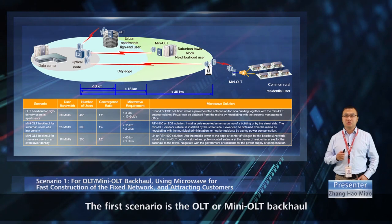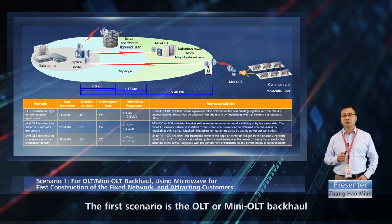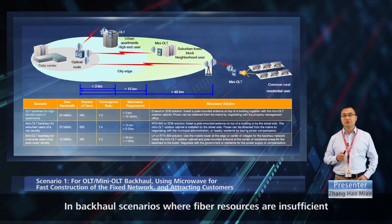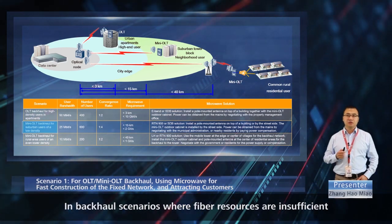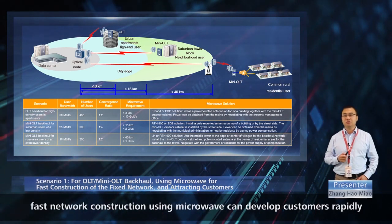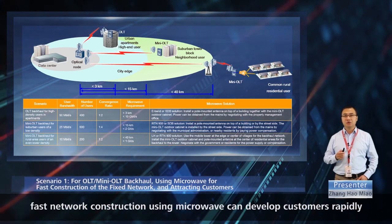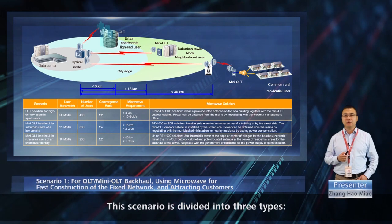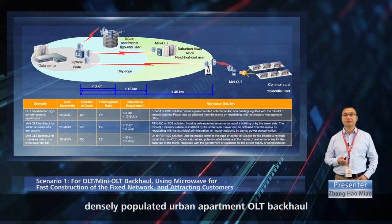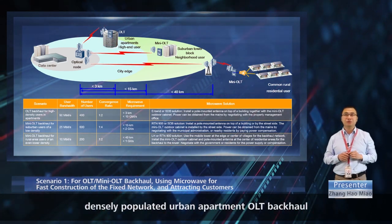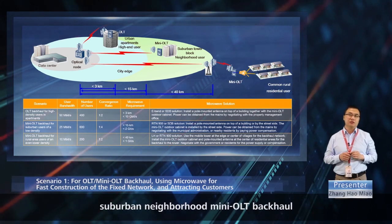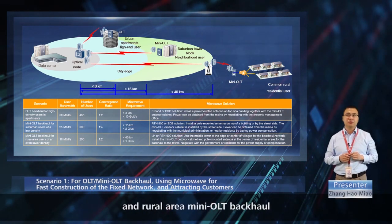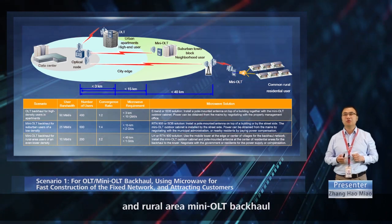The first scenario is the OLT or mini-OLT backhaul. In backhaul scenarios where fiber resources are insufficient, fast network construction using microwave can develop customers rapidly. This scenario is divided into three types: densely populated urban apartment OLT backhaul, suburban neighborhood mini-OLT backhaul, and rural area mini-OLT backhaul.